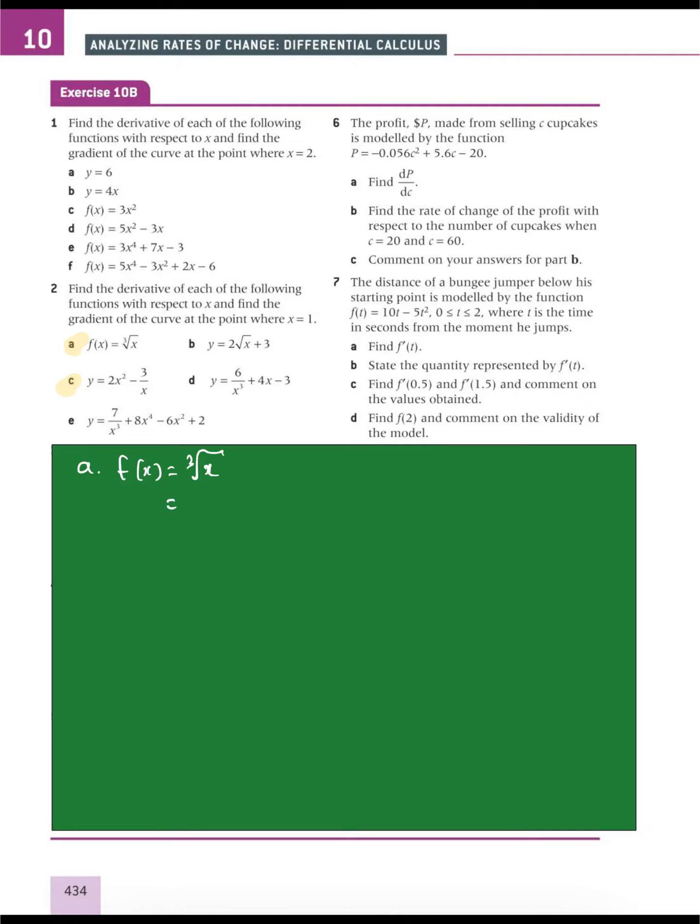I'm going to rewrite that as x to the one third. Therefore, the derivative equals one third x to the minus two thirds. Now, we have to find the gradient of the curve at 1. So that's going to be one third times 1 to the minus two thirds, and that equals one third.